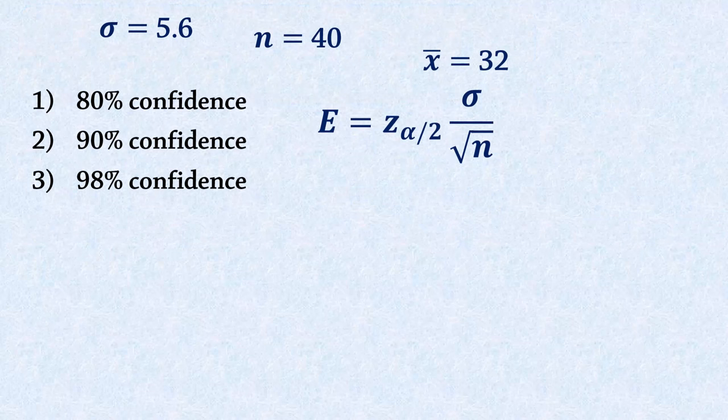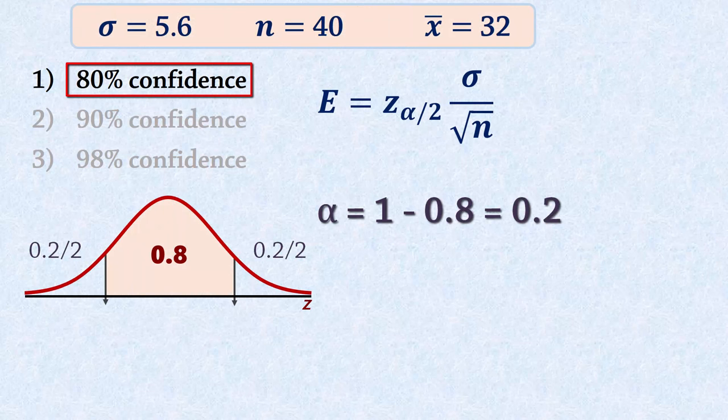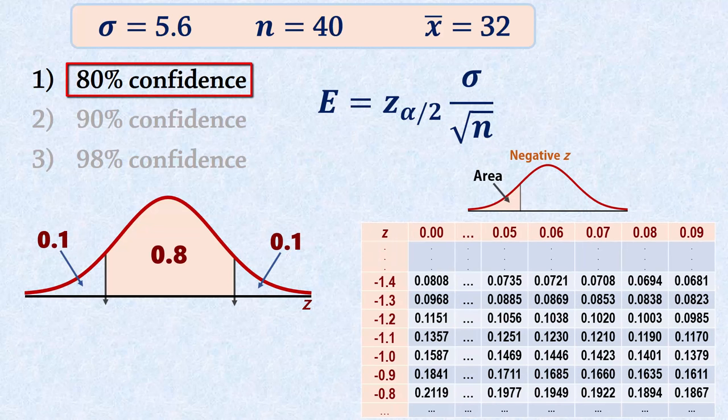For the 80% confidence interval, alpha is 0.2, so we have 0.1 in each tail. Looking up 0.1 in the normal tables, we find the closest value to be 0.1003.